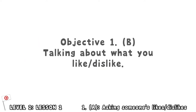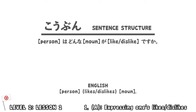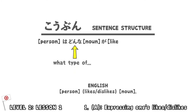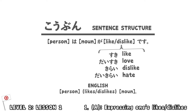Now, talking about what you like and dislike. You basically follow the same sentence pattern as before, except take out donna (or 'what type of'). Here are a couple of examples — see if you can identify whether or not the person liked, loved, disliked, or hated the following things.